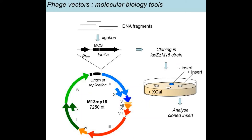Phages can be used as tools in molecular biology, both as phage vectors and as phagemid vectors. With phage vectors, we incorporate the gene of interest into the intergenic region of the phage circular DNA at a multiple cloning site, so we know precisely where the gene is inserted. We then allow the phage to clone and culture for use in downstream applications.